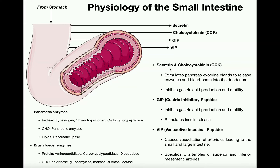The first two hormones are secretin and cholecystokinin, or CCK. These two hormones act synergistically to do two primary things. First, they stimulate the pancreas exocrine glands to release enzymes and bicarbonate into the duodenum — since chyme from the stomach is being squirted in, we need enzymes to break it down further and bicarbonate to neutralize the stomach acid. Second, these two hormones inhibit gastric acid production and motility.